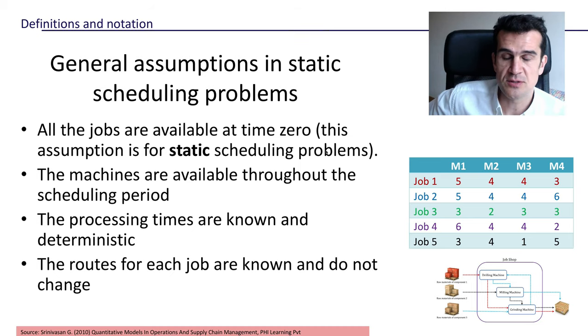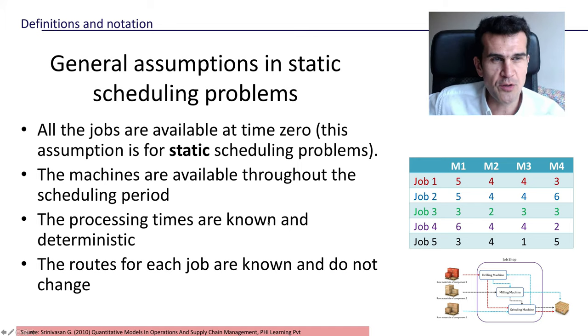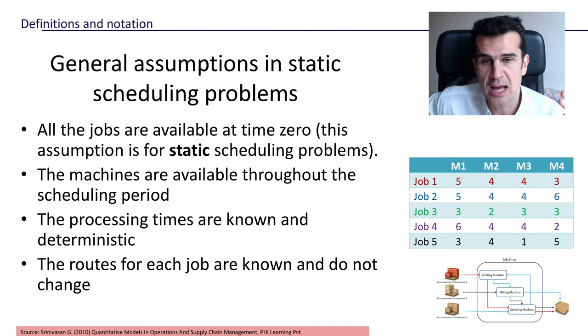The general assumptions are pretty simple. Basically, we're going to assume that all the jobs that we have to process are going to be available at time zero. This is the general assumption in static programs, and if some jobs would arrive during the day then we would have to process them the next day.